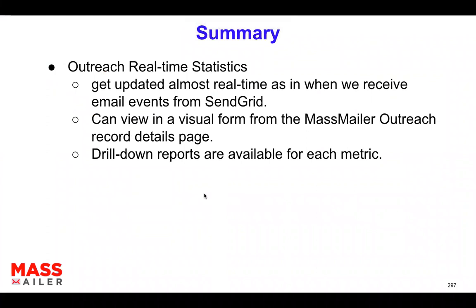Now if you look at the real-time statistics — the real-time statistics are updated as and when we get email events from SendGrid. As you know, we use SendGrid, and any time the email has been sent, processed, clicked, or opened, we get the event almost real-time. If somebody clicks on it, it may take sometimes a few seconds or a minute, but it's almost real-time — that's why we call it real-time statistics. Those events get captured and then we calculate the number of opens and display that number, which is always dynamic in nature.